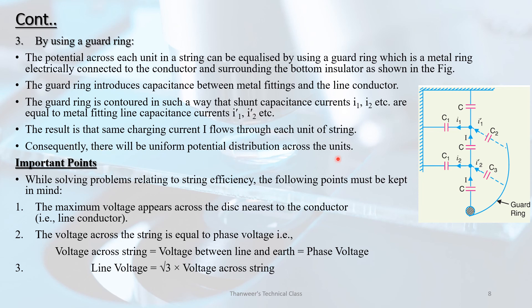Consequently, there will be uniform potential difference across the units. While solving problems relating to string efficiency, note that maximum voltage appears across the disk nearest to the conductor. The voltage across the string is equal to the phase voltage, i.e., line voltage divided by root 3, equals the voltage across the string.